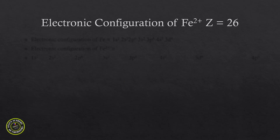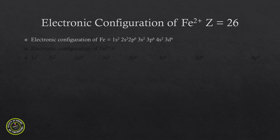The next thing we will do is write the electronic configuration of Fe. The atomic number is 26. Therefore, the electronic configuration of Fe is 1s², 2s², 2p⁶, 3s², 3p⁶, 4s², 3d⁶. This is based on the Aufbau order, where the orbitals are written in the increasing order of energy.